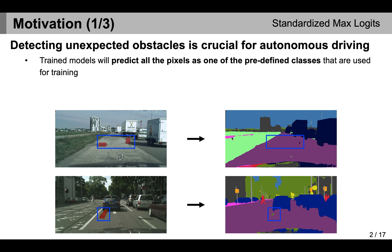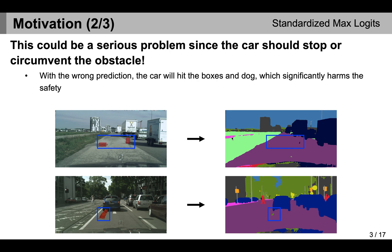We will first explain the motivation of our work. A given pre-trained segmentation model always predicts all the pixels with the pre-defined classes used for training. However, this could be problematic when the segmentation model confronts unexpected obstacles which were not observed during the training phase. For example, in the image, the boxes and the dog are examples of unexpected obstacles. However, as shown in the image, the model predicted such anomalies as one of the pre-defined classes, which is road in this case. This causes the autonomous vehicle to hit the boxes and dog, which could harm the safety significantly.